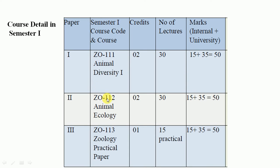Each course is allotted 50 marks, and these 50 marks are divided into two parts: 15 marks for the internal assessment and 35 marks for the external assessment. In internal assessment, your presentation, your project, and your internal exam are conducted. Out of 50 marks, you get graded. And finally, you have the university exam, and you get scored with all 50 marks.